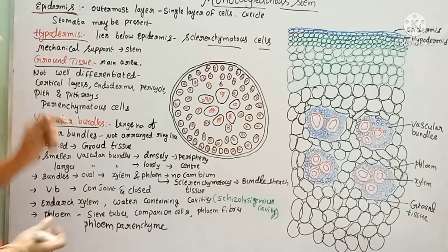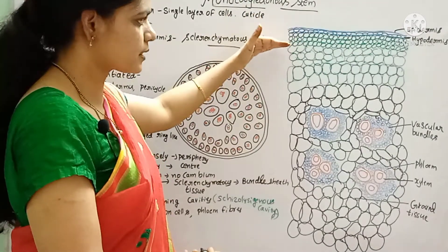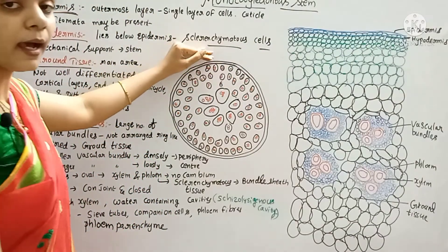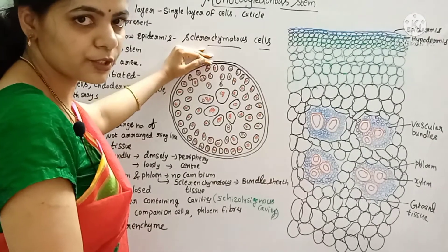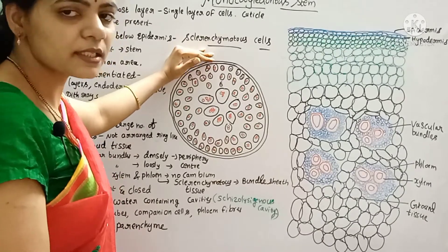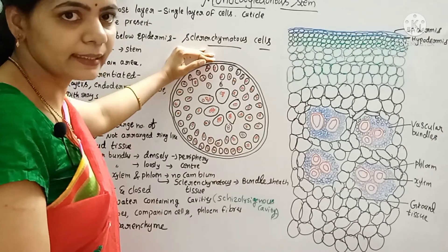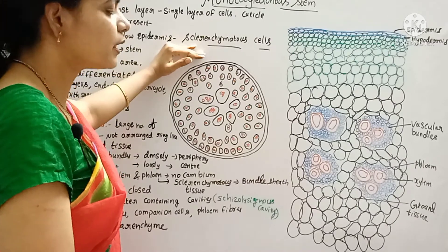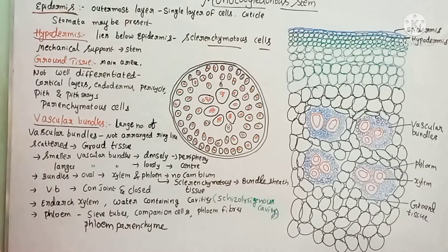Next is the hypodermis. Below the epidermis is the hypodermis. In this hypodermis, we have sclerenchymatous cells — cells with thick, lignified walls. In dicot stems we have collenchymatous cells, but here in the monocot stem we have sclerenchymatous cells. The hypodermis provides mechanical support to the stem.